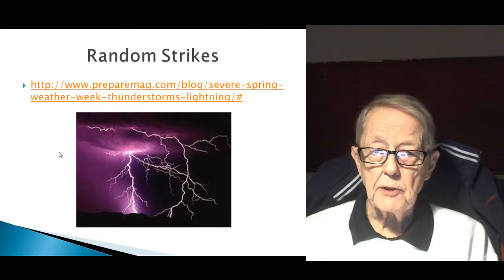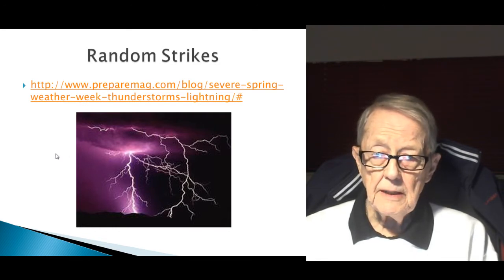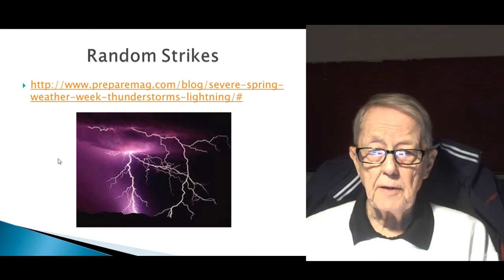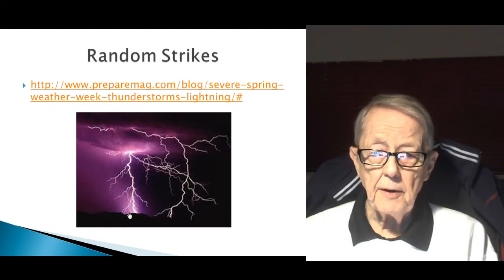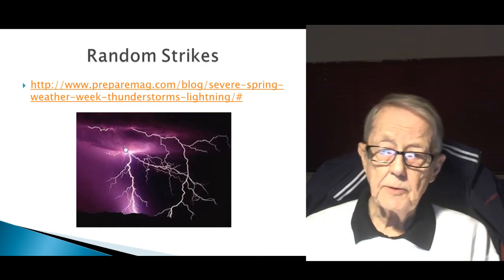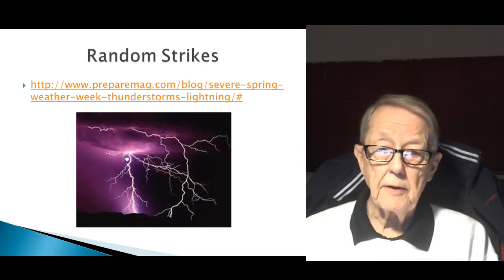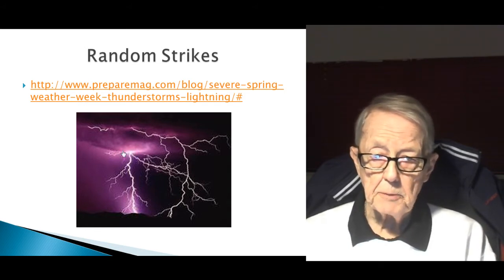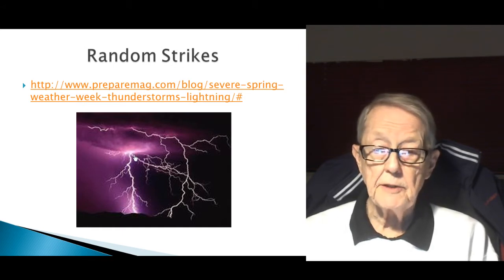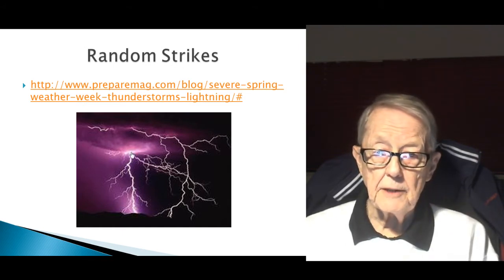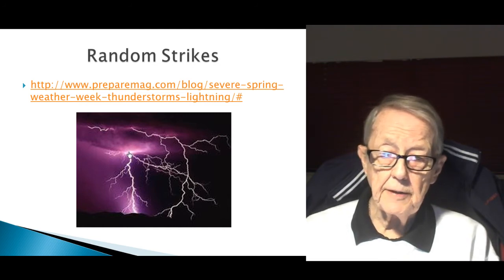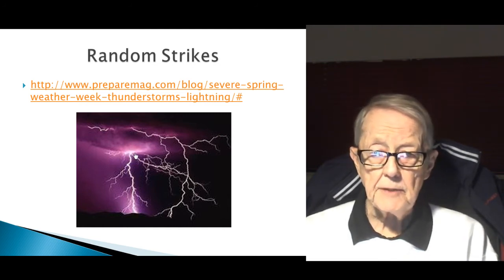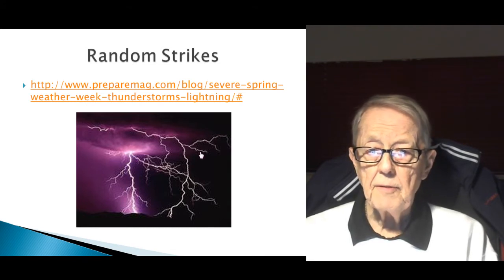This is a picture of lightning, and it's going all over the place — very intense lightning happening up here and very intense lightning happening down there. So presumably there is a lot of positive or negative. It's positive here, negative here, negative up here, positive down here. It gets very confusing, but you have lightning going in all directions. What makes it go in this direction?